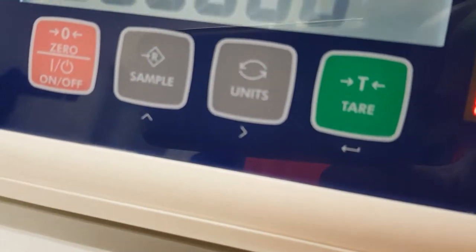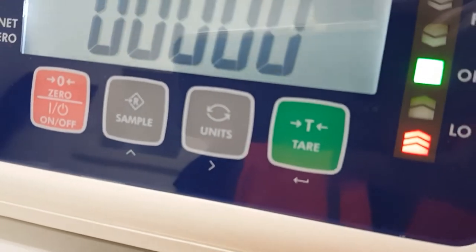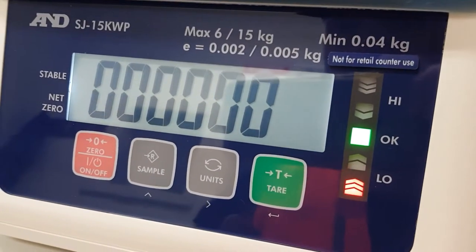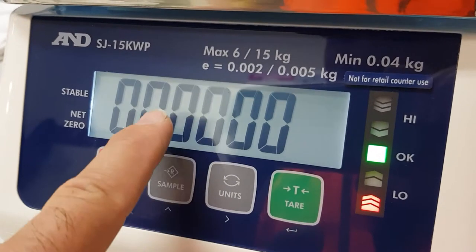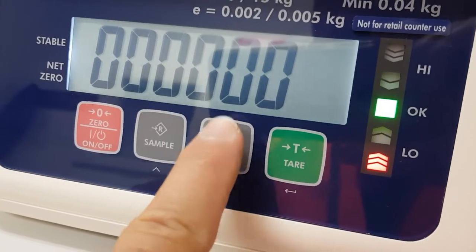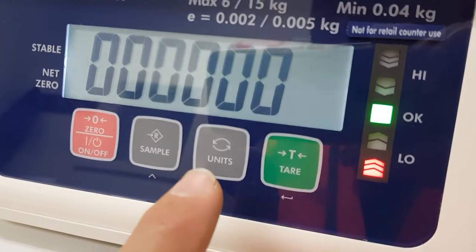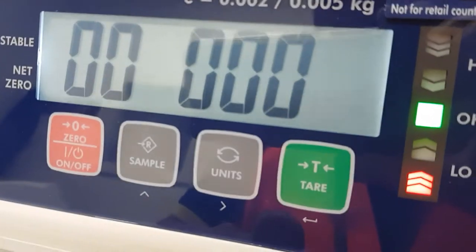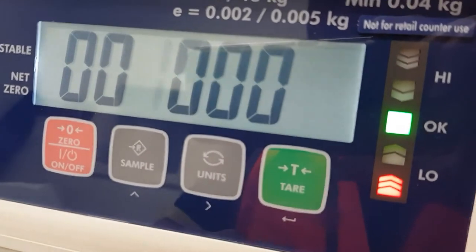We want the one thousands digit to start flashing. We press the right hand arrow, the units key, and then press it again until the one thousands digit is flashing. Then we increment it to the value you want, in this case one thousand. Then we can move on to the next set point.